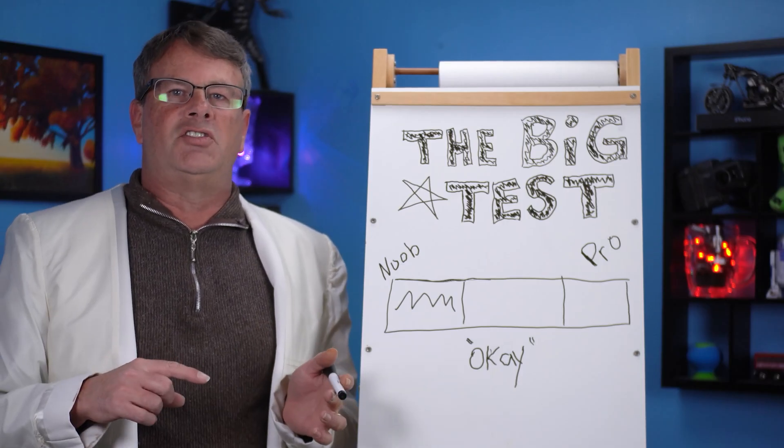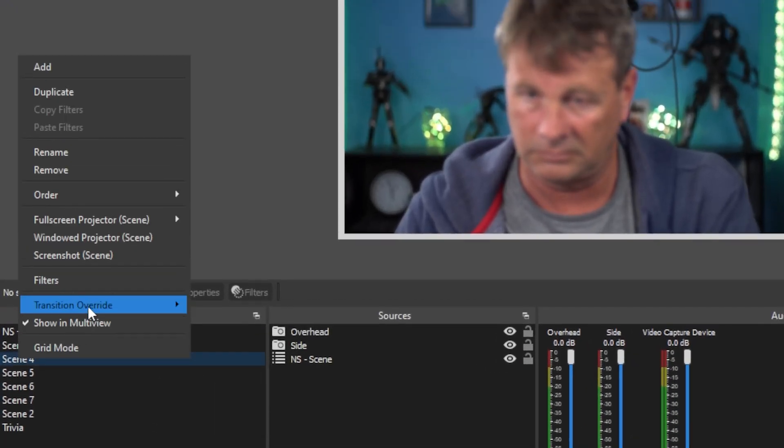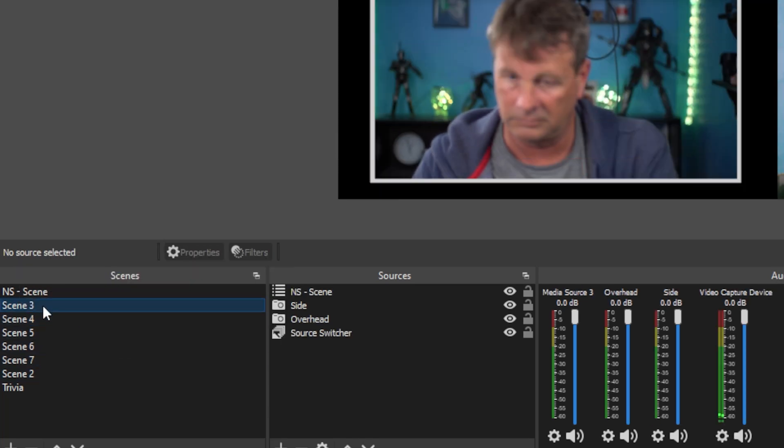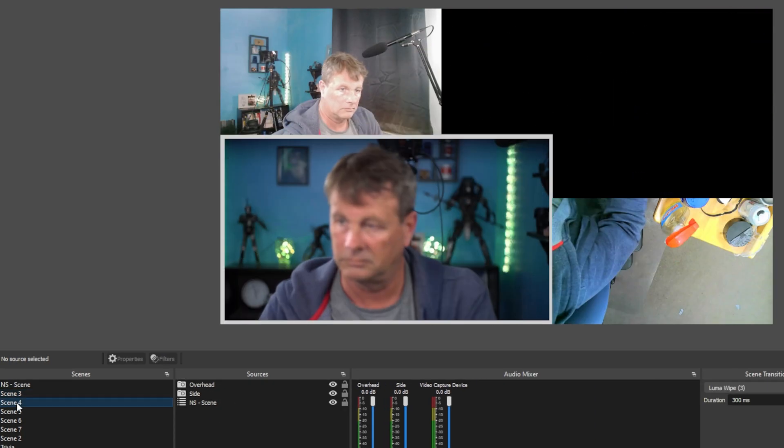You can also select a different transition for each scene. To do that, just select the scene and right-click on the transition override and select the transition that you want to use when you switch to this scene. So now every change can be totally unique.